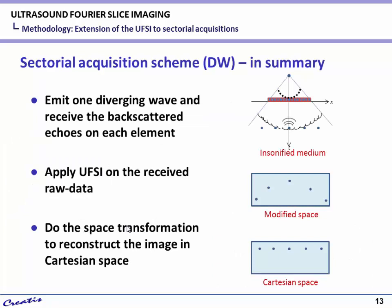Then we apply the sectoral acquisition scheme: you emit one diverging wave to insonify the medium and receive the reflected echoes on each element. Then you apply the ultrasound Fourier slice algorithm directly on the raw data, reconstructing the image in modified space. You can see there will be a distortion of the image, and then you need to do the space transformation derived previously to get the image in Cartesian space.